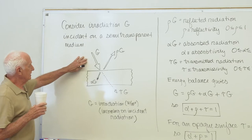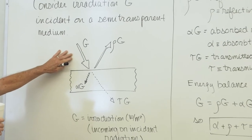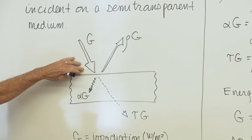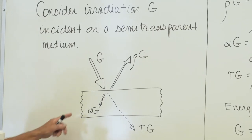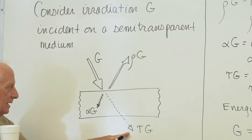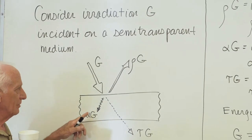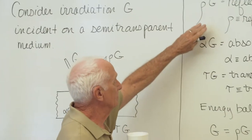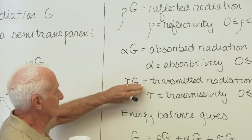G is the irradiation, watts per square meter. That incoming radiation strikes a surface. Some can be reflected, rho times G. Some can be transmitted all the way through the media. And some may be absorbed, alpha times G. So incoming radiation G can end up in three different possibilities: reflected, absorbed, or transmitted.